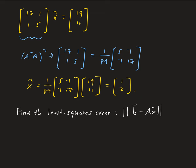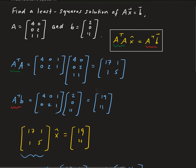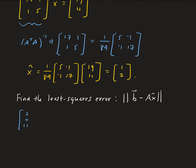So B was 2, 0, 11, minus A, which was 4, 0, 0, 2, 1, 1, times X hat, which is 1, 2.